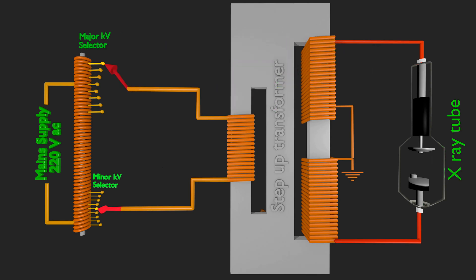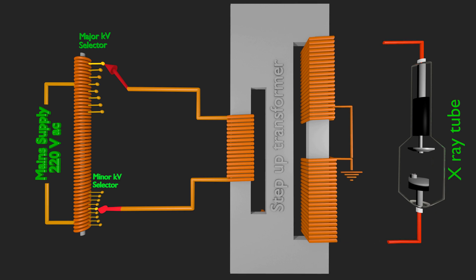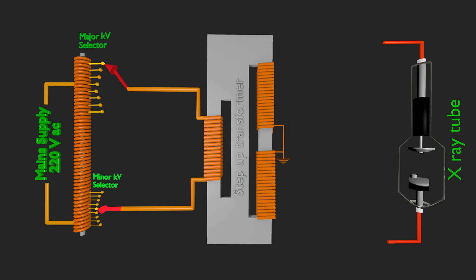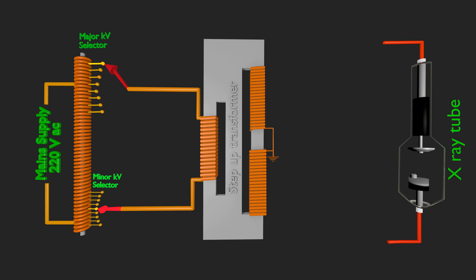X-ray tubes always need a positive potential at anode then cathode. But voltage across secondary of step-up transformer is alternating type, hence needs rectification. Rectification changes AC voltage input to pulsating DC.